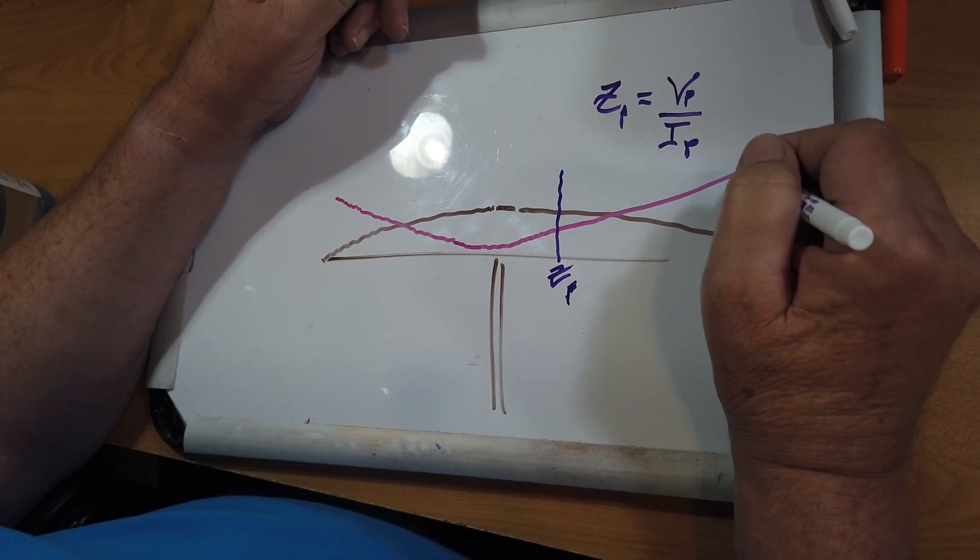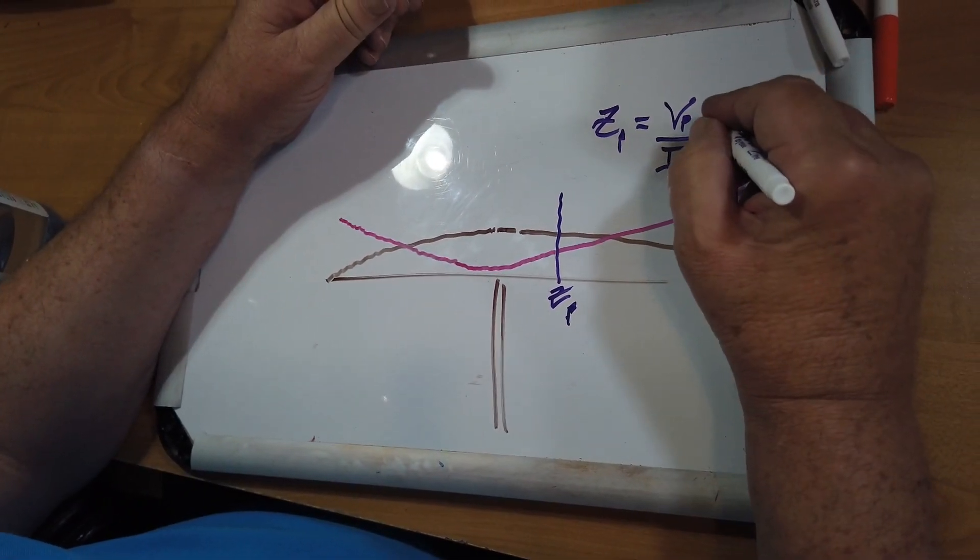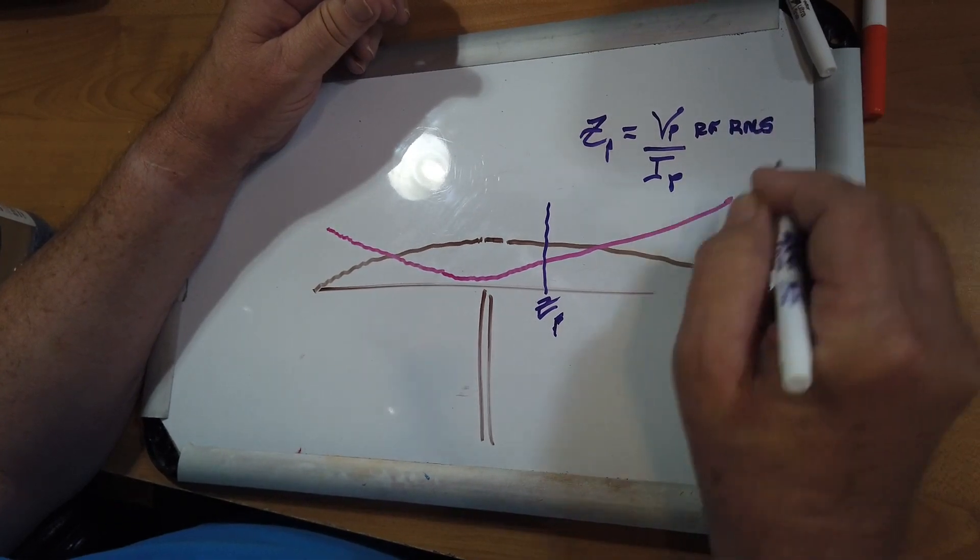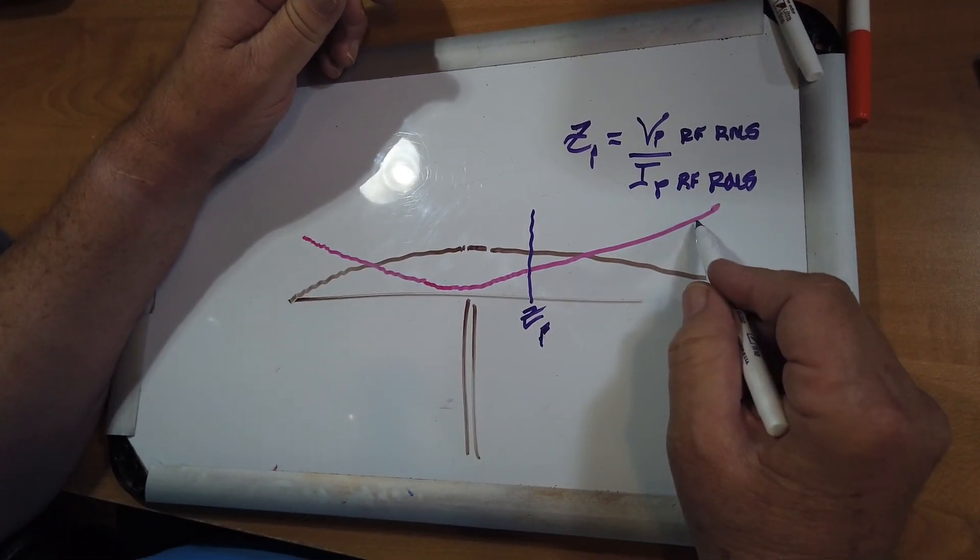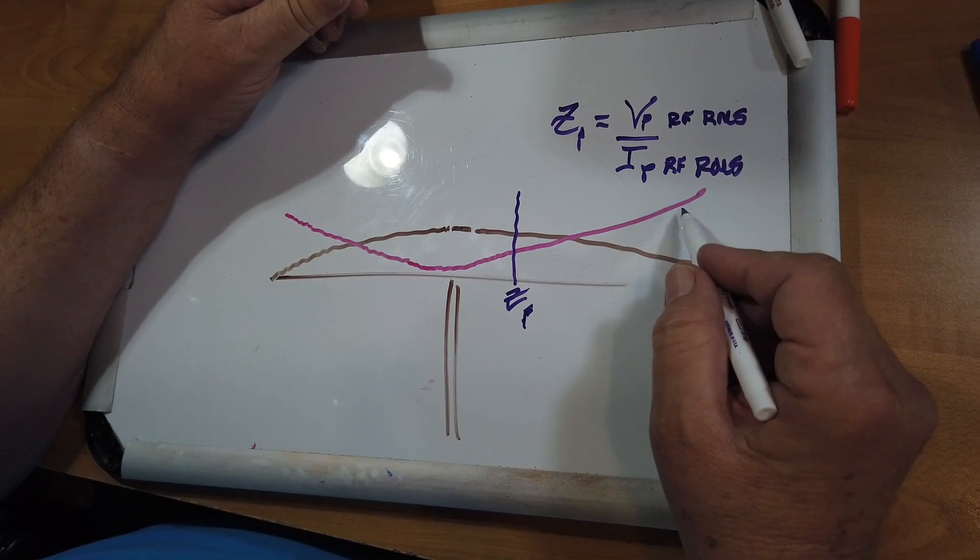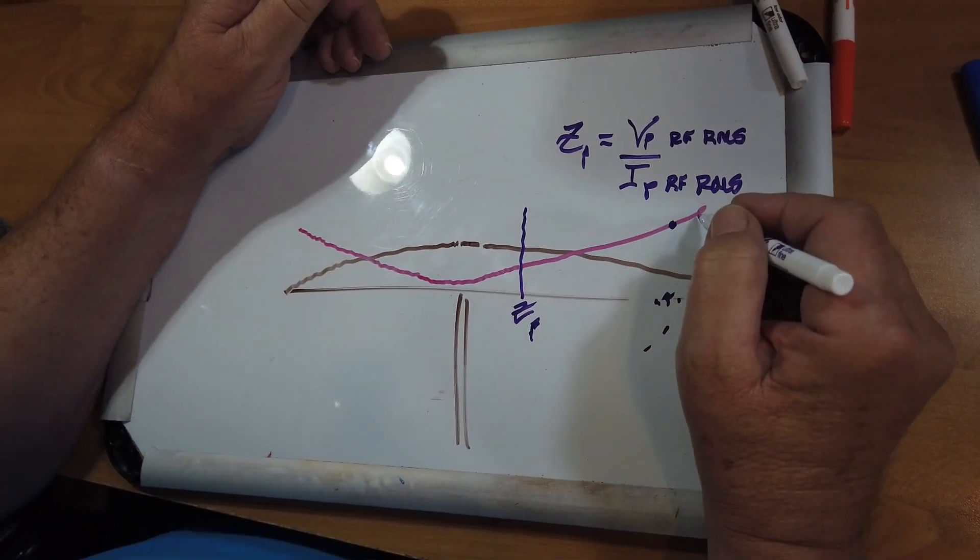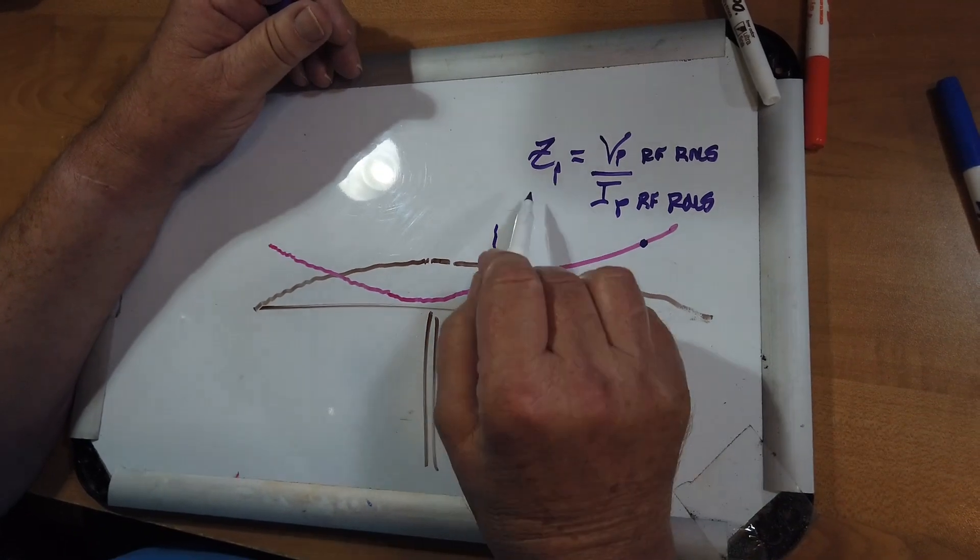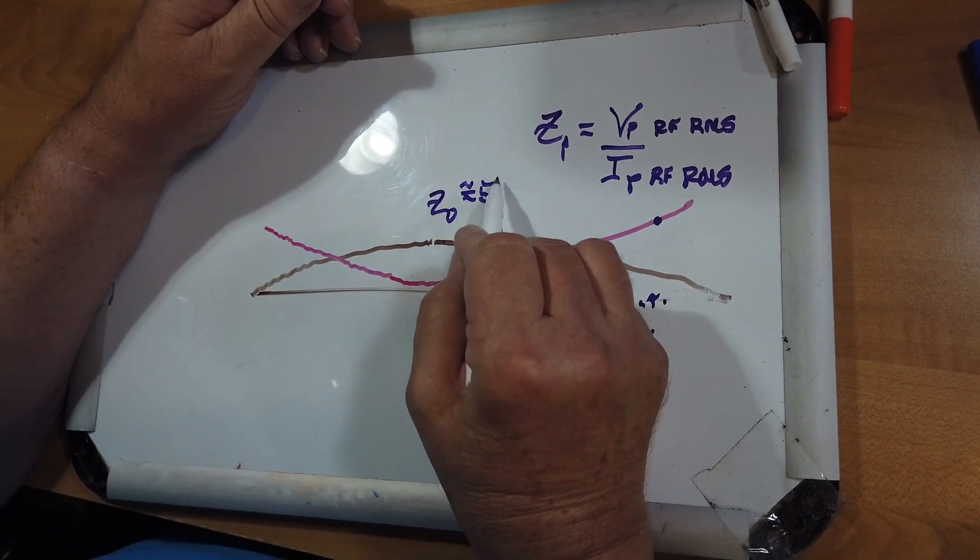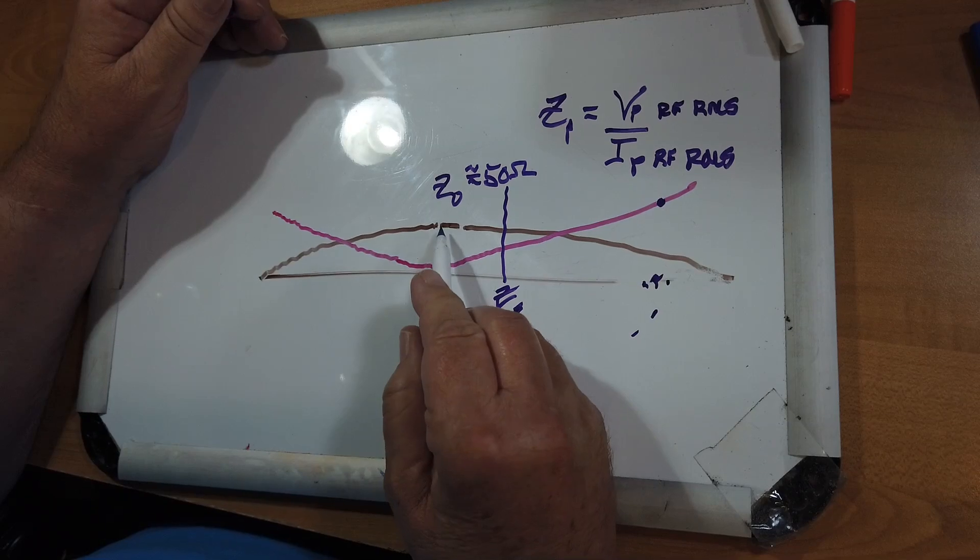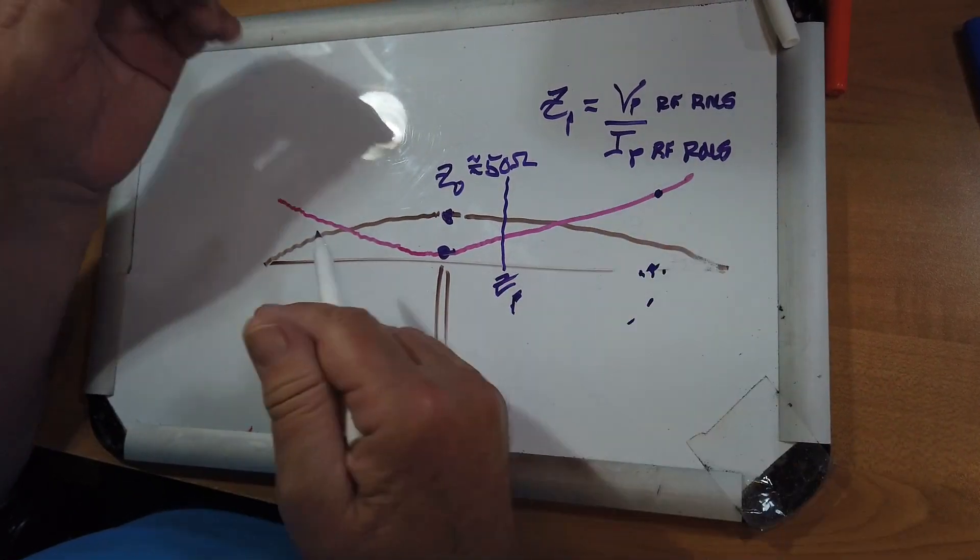Now, these are not actual waveforms. This voltage is an RF RMS voltage, and this is also an RF current RMS, root mean square. So if you were to connect an RF voltmeter at this point, you would find that ratio right there. So the Z at the center, Z naught at the center, is on the order of 50 ohms. That means the voltage is 50 times the current. Clearly not drawn to scale.